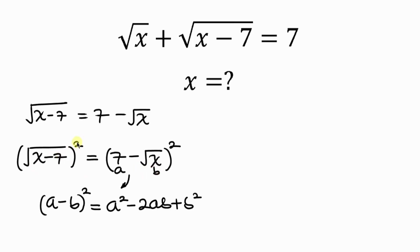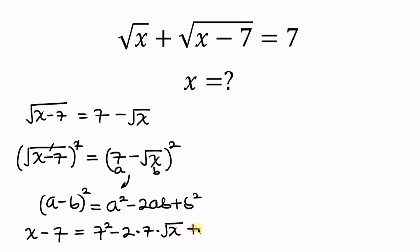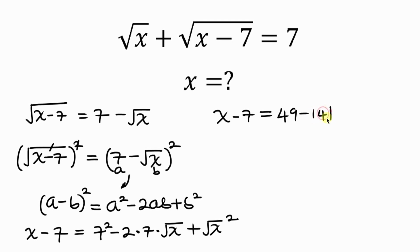On the left, the square cancels the square root, so we have x minus 7 equal to, now expanding in this form, 7 squared minus 2 times 7 times the square root of x, plus the square root of x squared. Simplifying further, x minus 7 equals 49 minus 14 root x.